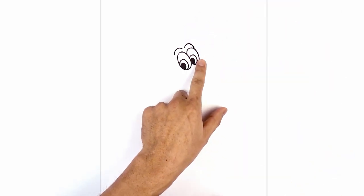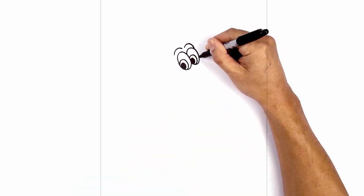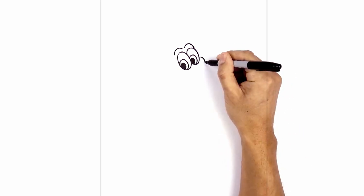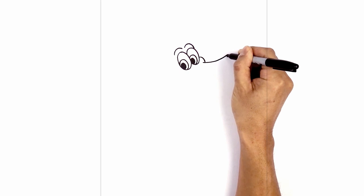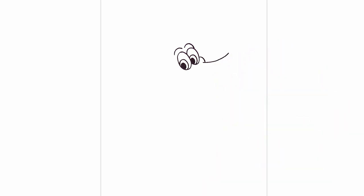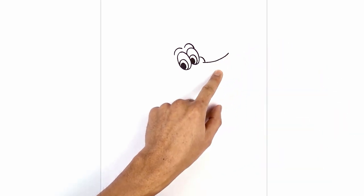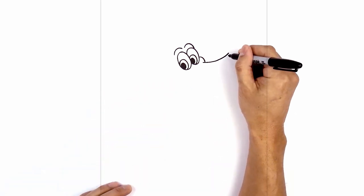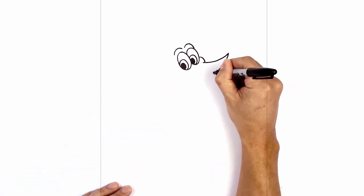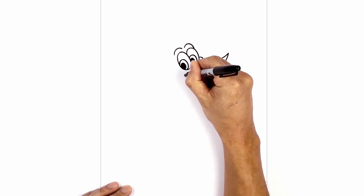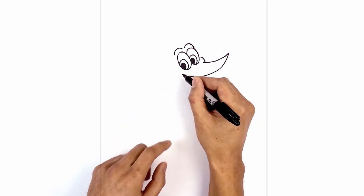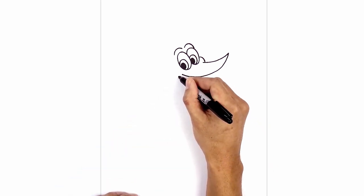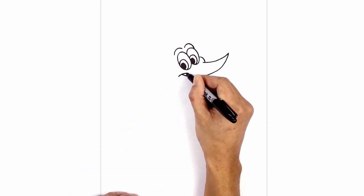Now let's move over towards the right and draw in the beak. We start on the outside of the right eye, curve around the cheek, and then down. We're going to create a little overlap — step back, curve out towards the right, and now pull it up towards the tip of the beak. From the tip, we want to curve down and just underneath the left eye.